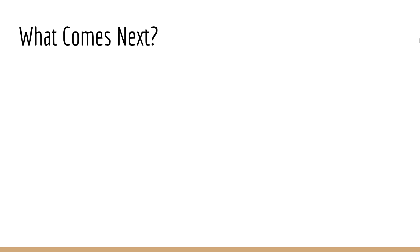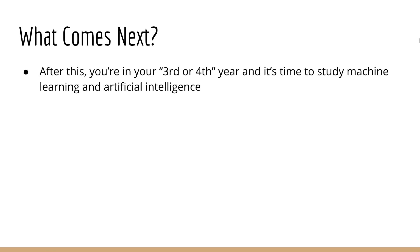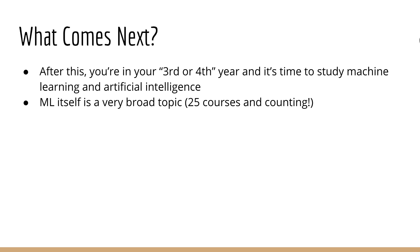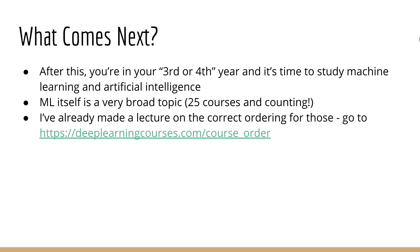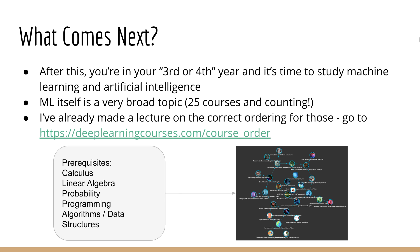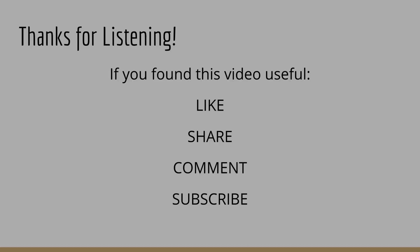Once you've completed all this, what comes next? What comes next is the fun part — that's where you get to do actual machine learning. Machine learning itself is a broad topic. Today I have over 25 courses on various areas of machine learning, and I don't see myself running out of topics anytime soon. I've already made a video on which order to take those courses in, which you can find at deeplearningcourses.com/course-order. Basically the beginning of that list is where you should start at the end of your studies in calculus, linear algebra, and so on from this video. Of course, you can always try skipping ahead, but you have to be competent enough to know where you need to fill in the gaps.